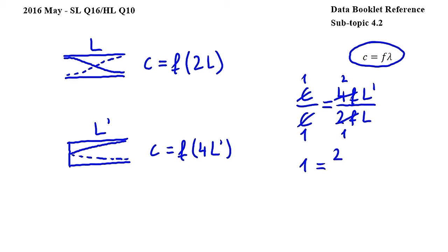Let's write this down, so we get 1 is equal to 2L' over L, and dividing by 2 on both sides we get L' over L is equal to 1 over 2, therefore the answer to this question is D.